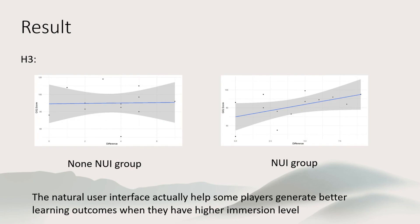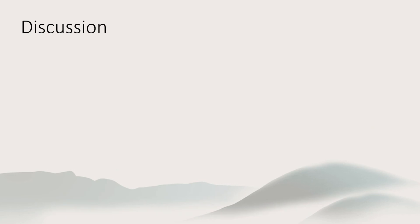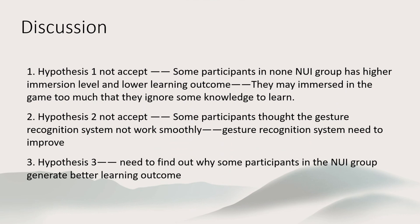We can see that the natural user interface actually helps some players generate better learning outcomes when they have a higher immersion level. We cannot accept hypothesis 1, as there is no significant difference between two groups. Some participants in the non-natural user interface group had higher immersion but lower learning outcomes — according to references, they may have been too immersed in the game and ignored some knowledge. We cannot accept hypothesis 2 either, as some participants noted the gesture recognition system did not work smoothly, so we should improve it to eliminate the influence of this issue. As for hypothesis 3, some participants performed better in the natural user interface group when they had a higher immersion level. Further research is still needed after the interfering elements are eliminated to fully accept this hypothesis.